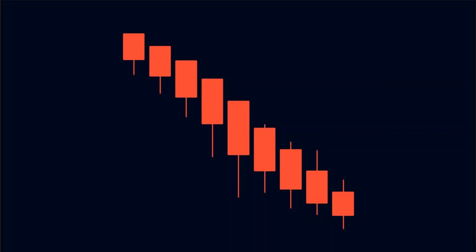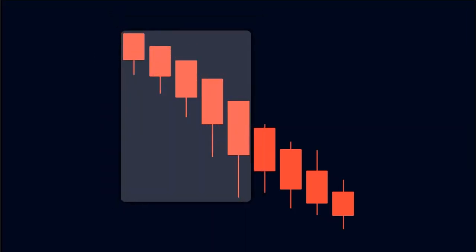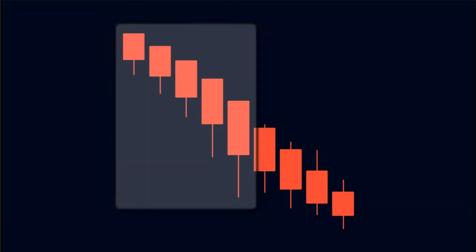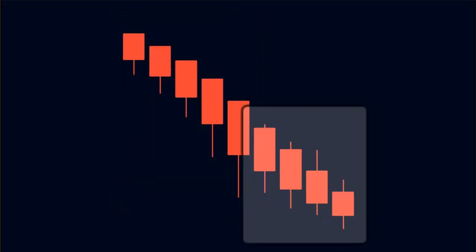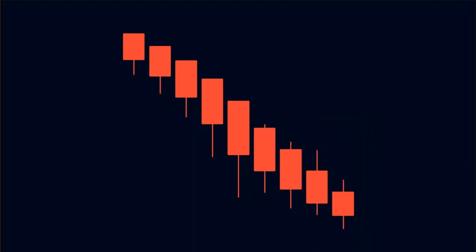A typical downtrend looks like this on the Heiken Ashi chart. The trend starts with a small red candle. As new candles are formed, the body of each candle gets bigger and bigger, and there are virtually no upper wicks — indicating sellers are gaining momentum and strength. Then, as new candles are formed, the body of each candle starts to become smaller and smaller. We also witness upper wicks on these candles, indicating that buyers are pushing the price and sellers have become weak. Hence, if we hold any short trades, we should take profits at this price level.